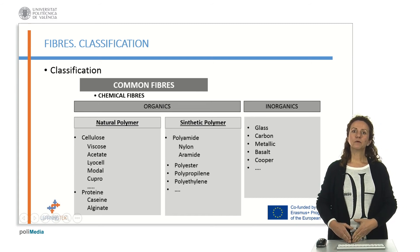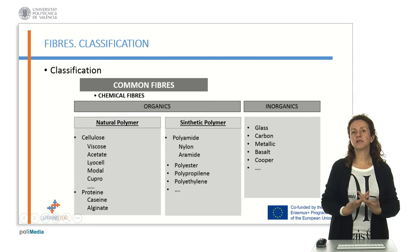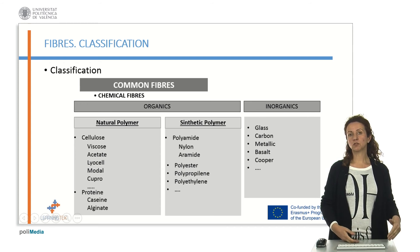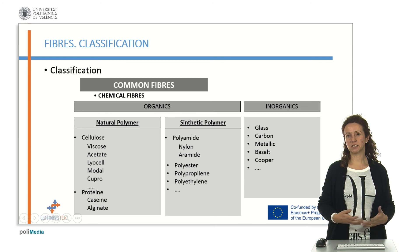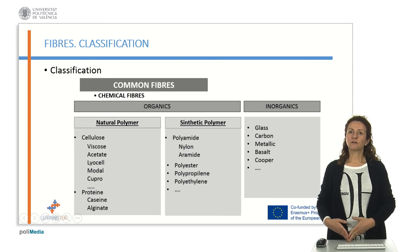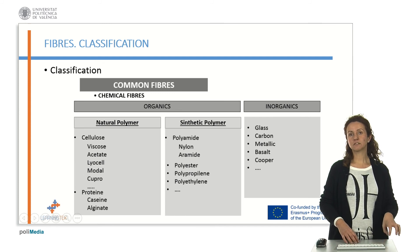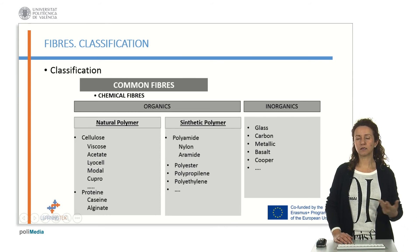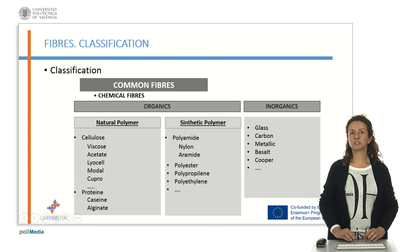Inside the organic group we have another subgroup: the synthetic polymer. A synthetic polymer is a polymer made in the laboratory or in a company — so it's made synthetically. In this group we can find polyamides, which could include nylon or aramides, polyester, polypropylene, polyethylene, chlorine fibres, fluorine fibres, etc. If we move to inorganic chemical fibres, we find different ones which can include glass fibre, carbon fibre, metallic ones, basalt, copper, or others like inox or different inorganic compounds transformed into fibres.